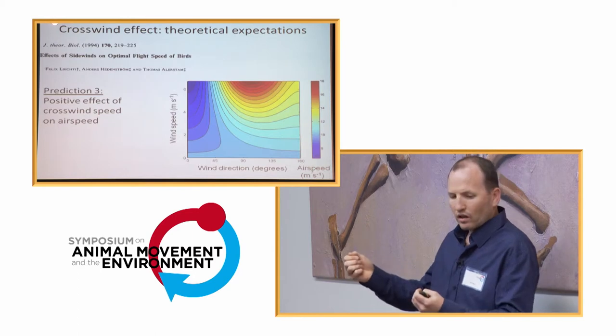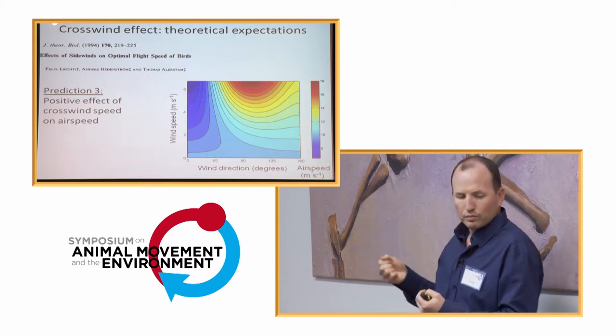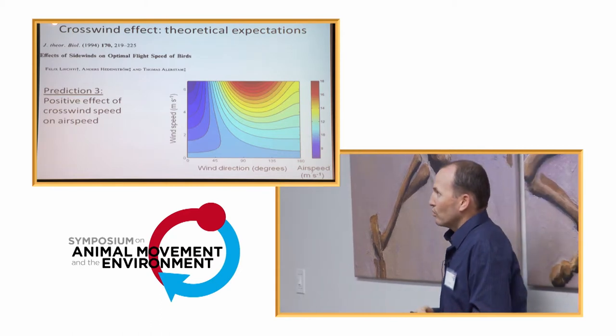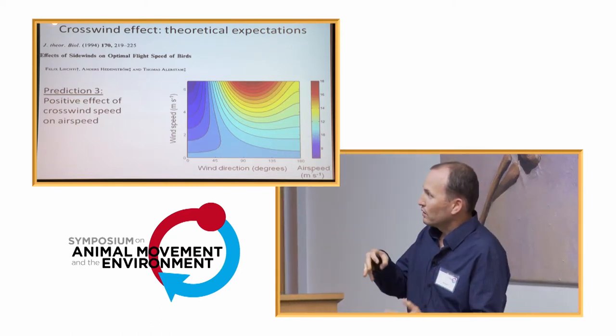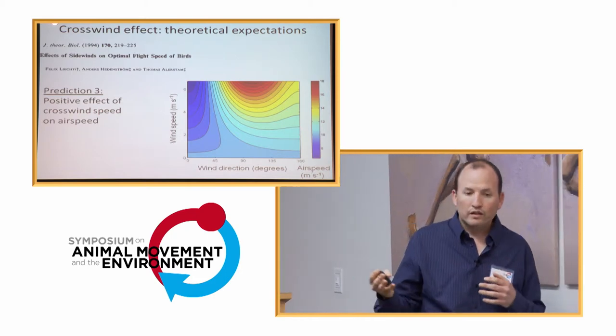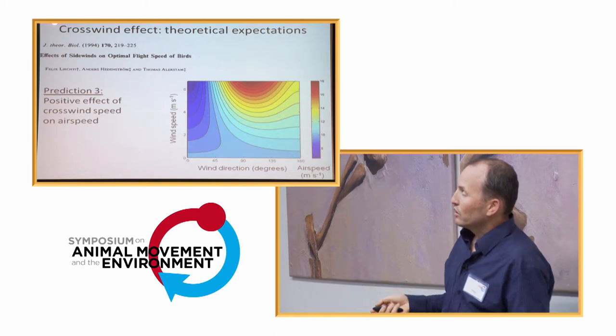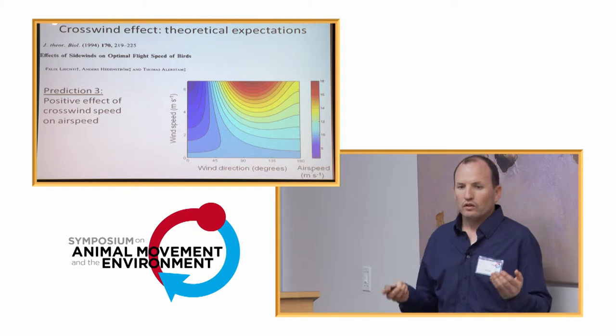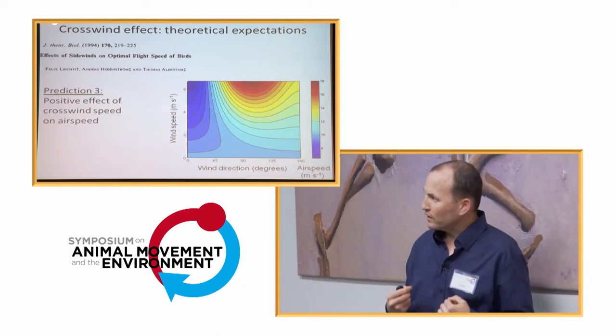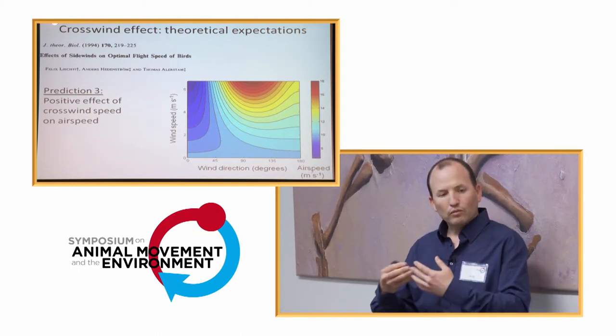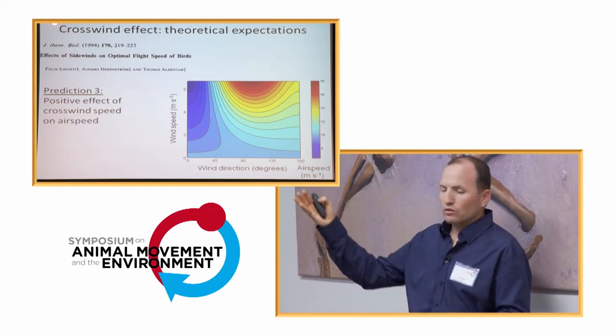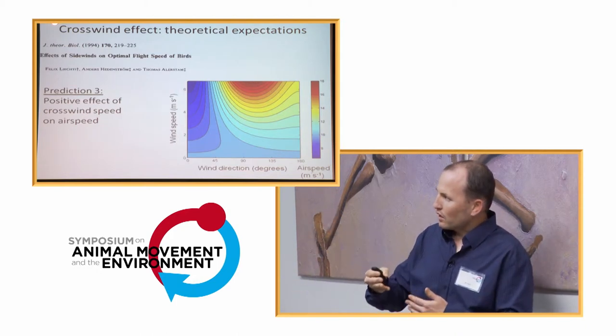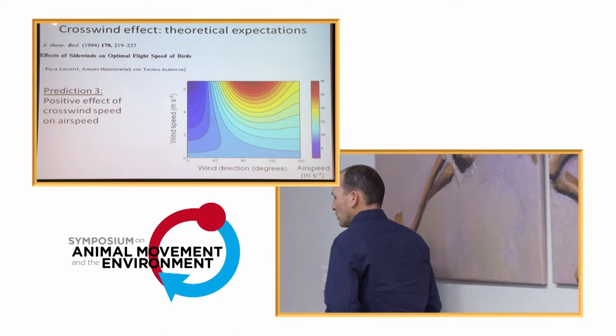So, we can see here this combined theoretical tailwind and crosswind expectation, meaning that in low angles, tailwind conditions, the bat is expected to decrease its own speed. But then, when wind changes to crosswind and to headwind, the relationship reverses, and the bat is expected to increase its own speed.